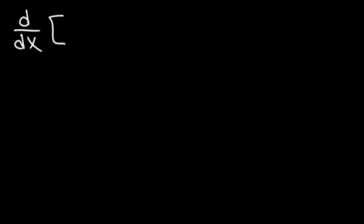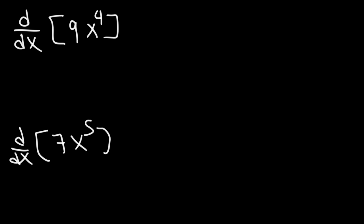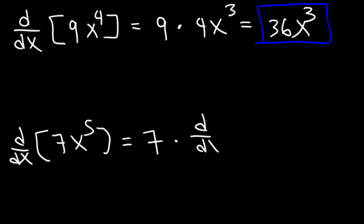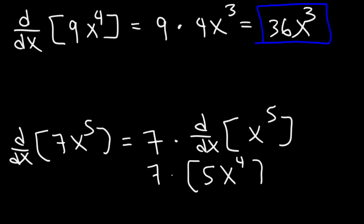So here's another one. Find the derivative of 9x to the 4th and also 7x to the 5th power. So this is going to be 9 times the derivative of x to the 4th, which is 4x raised to the 4 minus 1, or 4x cubed. Multiply 9 times 4, so the answer is 36x to the 3rd power. For the next one, it's 7 times the derivative of x to the 5th, which is 5x to the 4th power. And 7 times 5 is 35, so you get 35x raised to the 4th power.